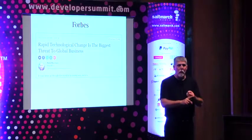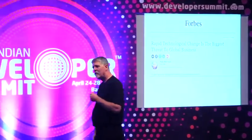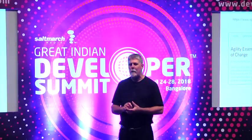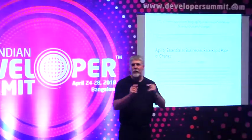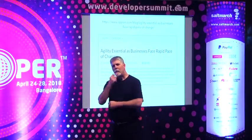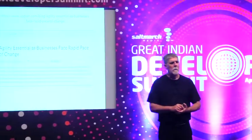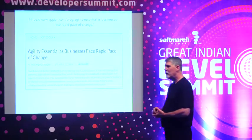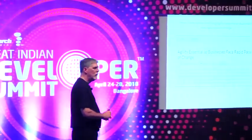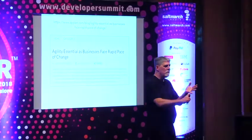This article from Forbes says: rapid technology change is the biggest threat to global business. Is technology changing? Every day, more so than 10 or 20 years ago. These monolithic architectures — which are simple, fairly reliable, and fairly performant — served us well when there wasn't the rate of change we have today. An article from Appian says: agility essential as businesses face rapid pace of change. And now we know what agility means — how fast can we respond to changes?